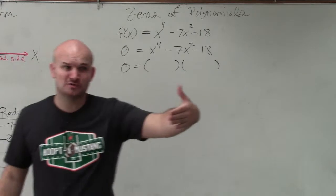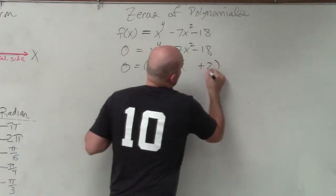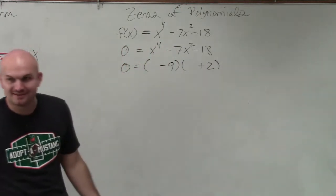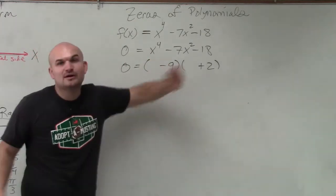And then we also know, since we've done this problem four times, we know the two numbers are negative 9 and positive 2. I mean, it's the same numbers. I haven't changed numbers. The only thing I've been changing is the x's. So we know the two numbers are there.